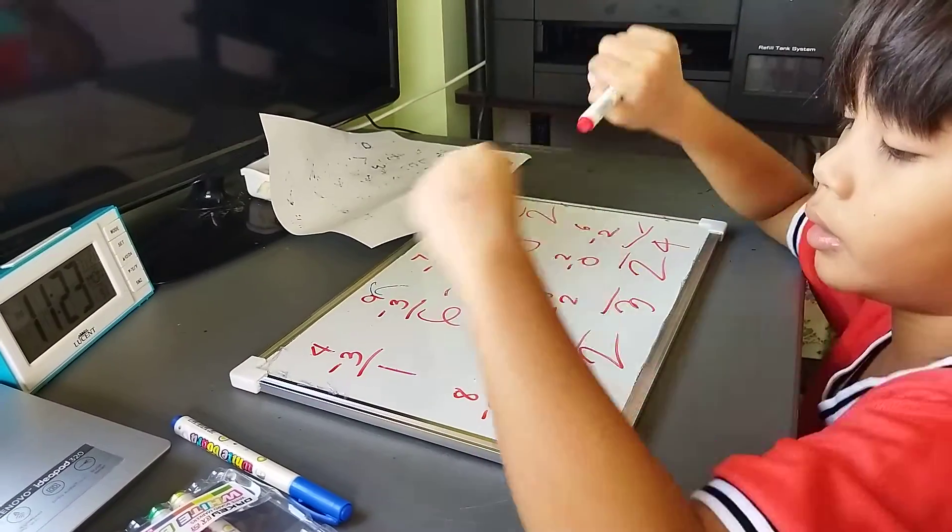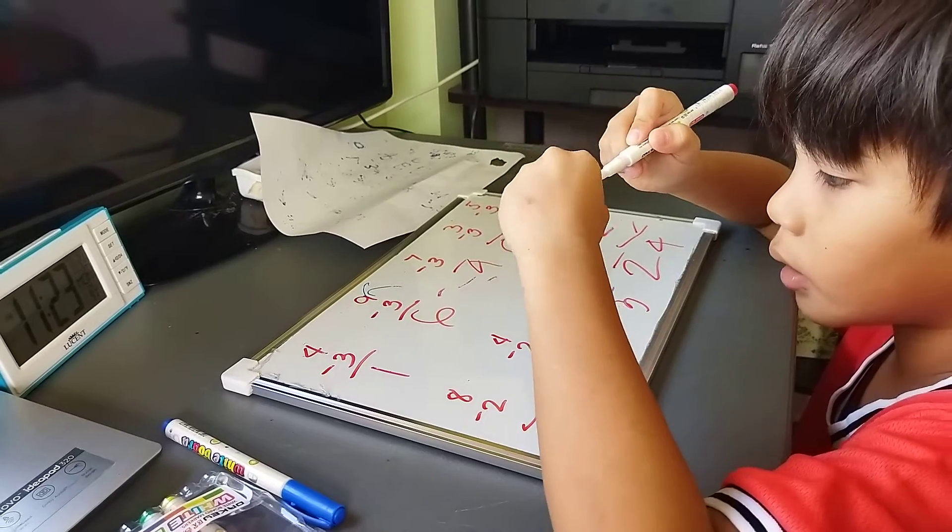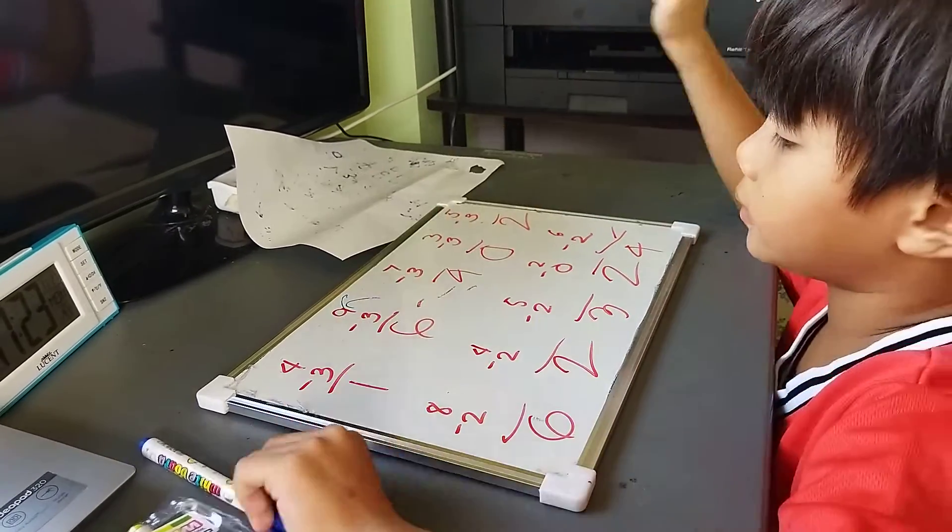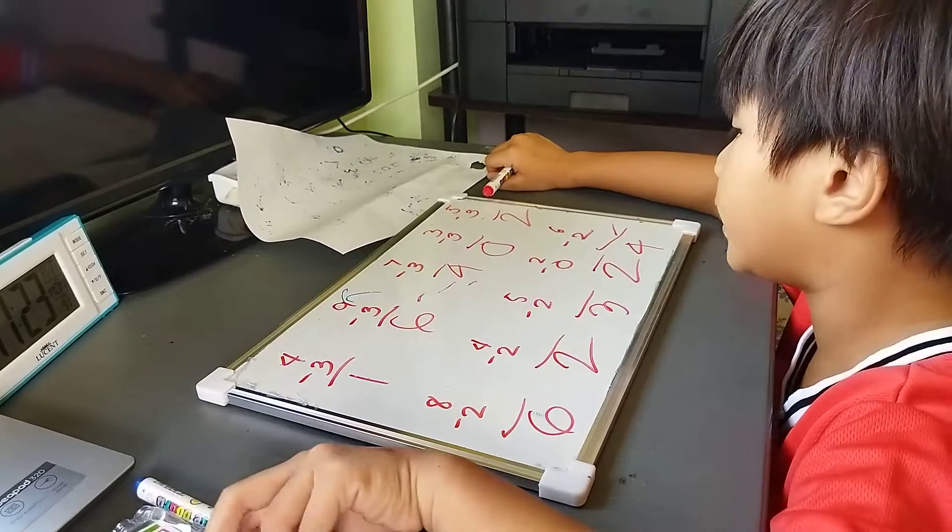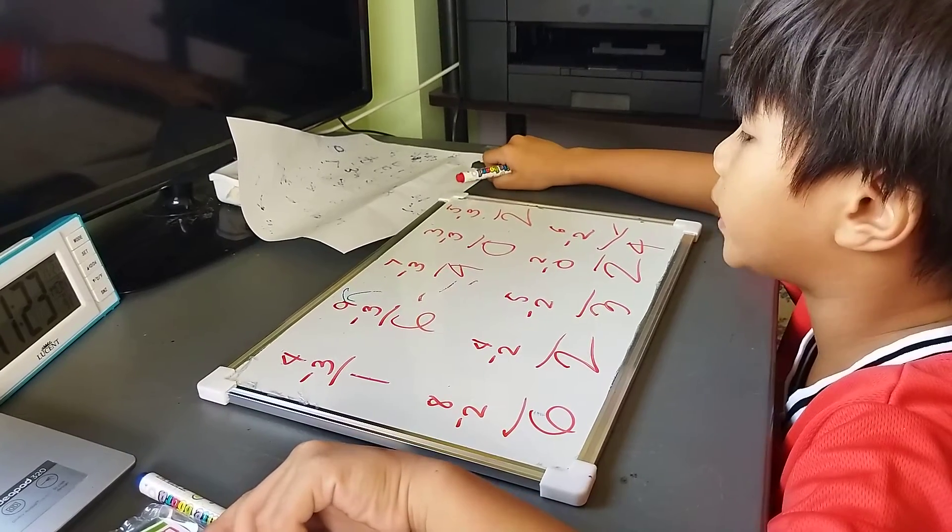4 minus 3 equals 1. 9 minus 3 equals 6. 7 minus 3 equals 4. 3 minus 3 equals 0. 5 minus 3 equals 2.